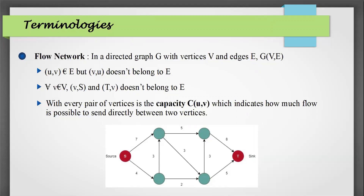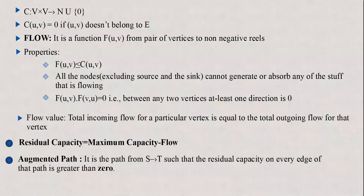For all small v belonging to capital V, edges (v,s) and (t,v) do not belong to E — meaning there are no outgoing edges from the sink and no incoming edges to the source. With every pair of vertices there is a capacity which indicates how much flow can be sent between the two vertices. Capacities are non-negative. If the capacity between two vertices equals 0, it means there is no edge (u,v) in E or no flow is possible between those two nodes.